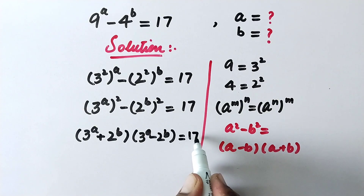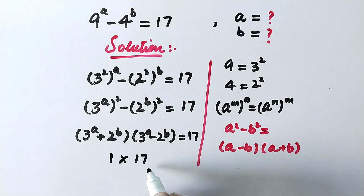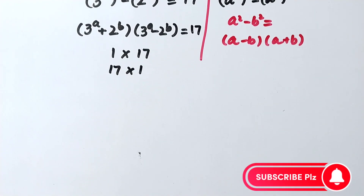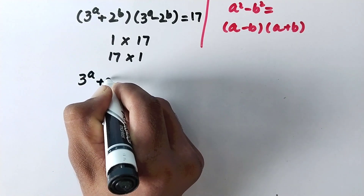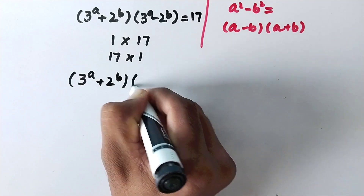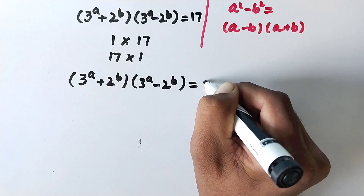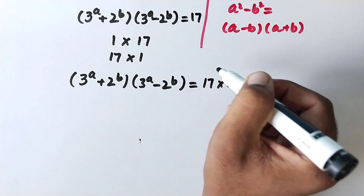Now we can see that 17 is a prime number and it has only two factors: 1 and 17. We can express it as 17 multiplied by 1. So here we write (3 to the power a plus 2 to the power b) times (3 to the power a minus 2 to the power b) is equal to 17 times 1.